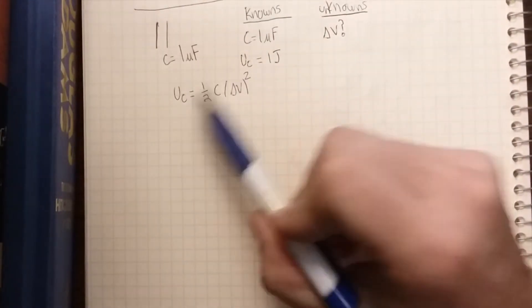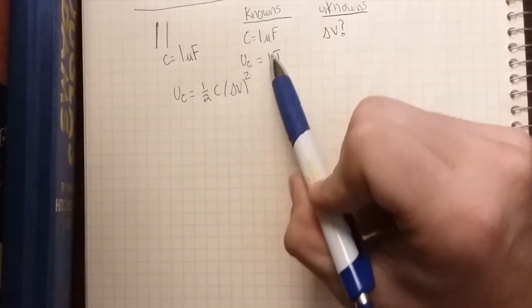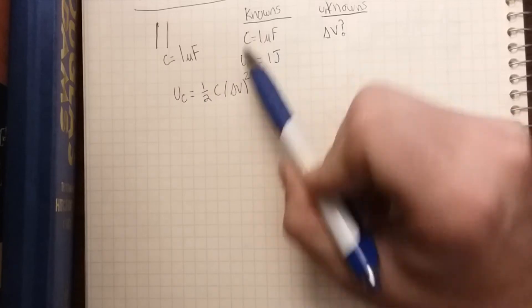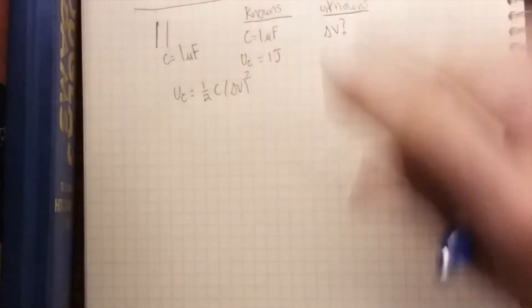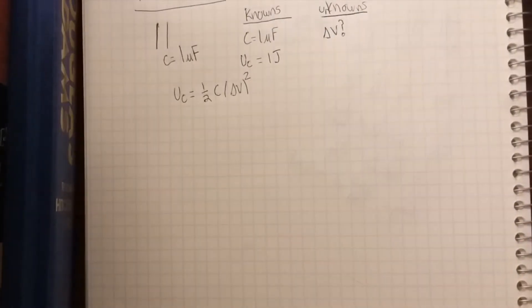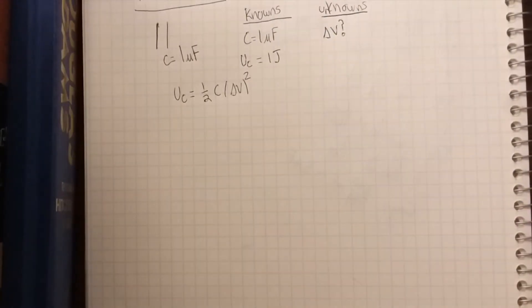Okay, so this has our knowns - the potential energy and the capacitance - and it also has our unknown delta V, with no additional variables in the equation. That's how we identify this is the equation we want to use.